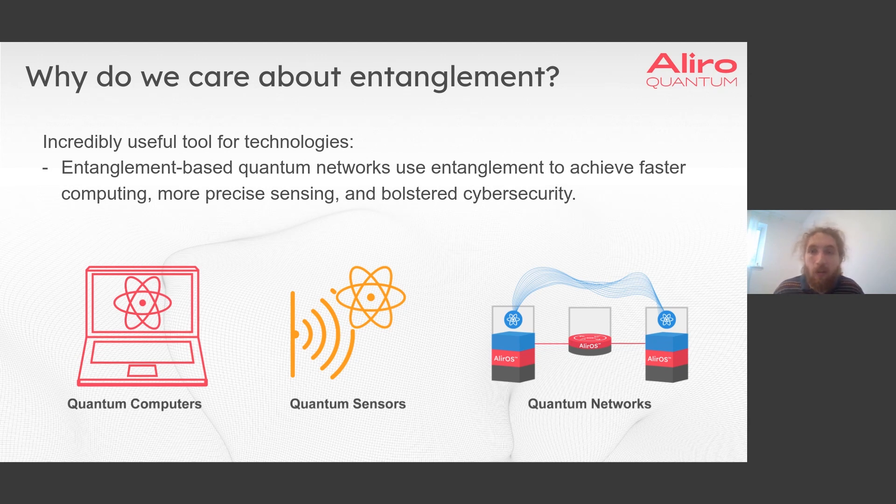Similarly, quantum networks that utilize entanglement achieve levels of performance and new capabilities that cannot be matched by their classical counterparts or by quantum networks that don't utilize entanglement. Entanglement-based quantum networks will be used to scale quantum computers and quantum sensors to achieve much faster computing and more precise sensing, and will also be used to achieve provable security for classical and quantum information alike. You will see exactly where entanglement is used when we examine use cases and applications of entanglement-based quantum networks.